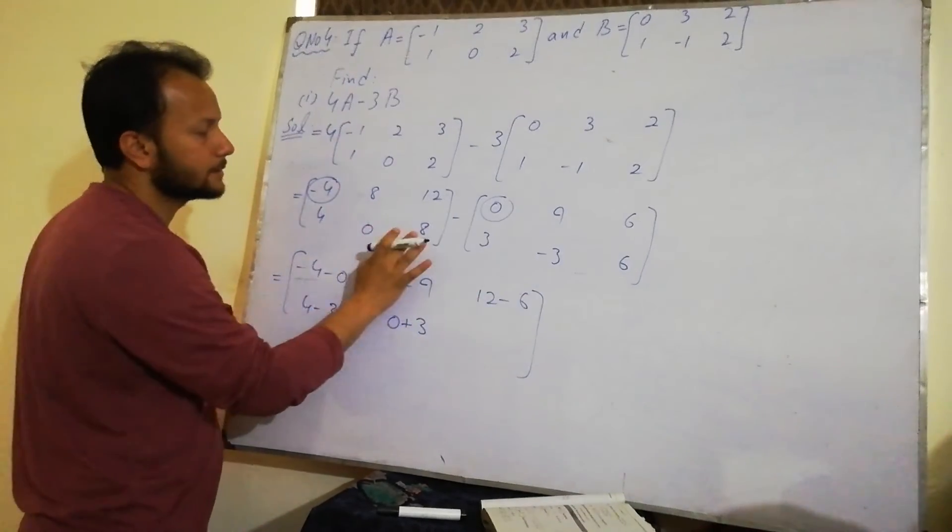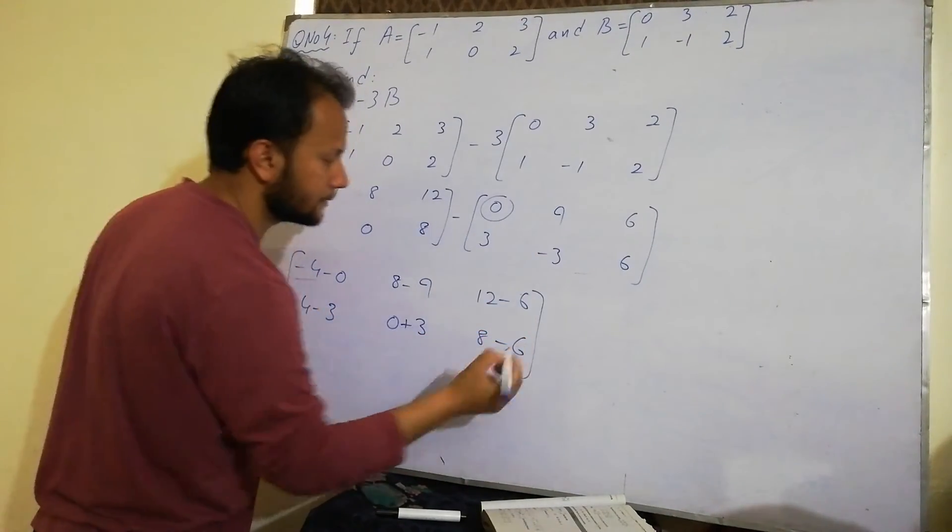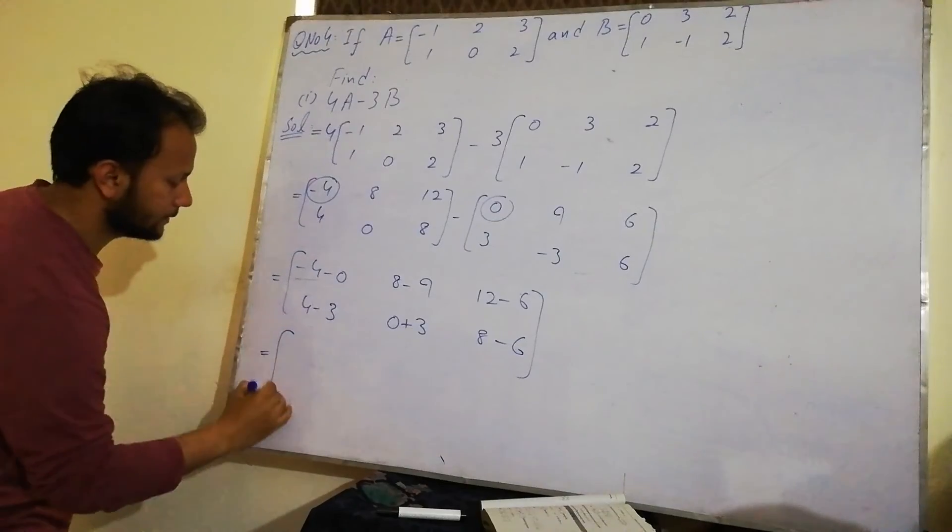So 0. Minus minus plus. Signs. 8. Minus. Minus minus. 6. This is the answer.